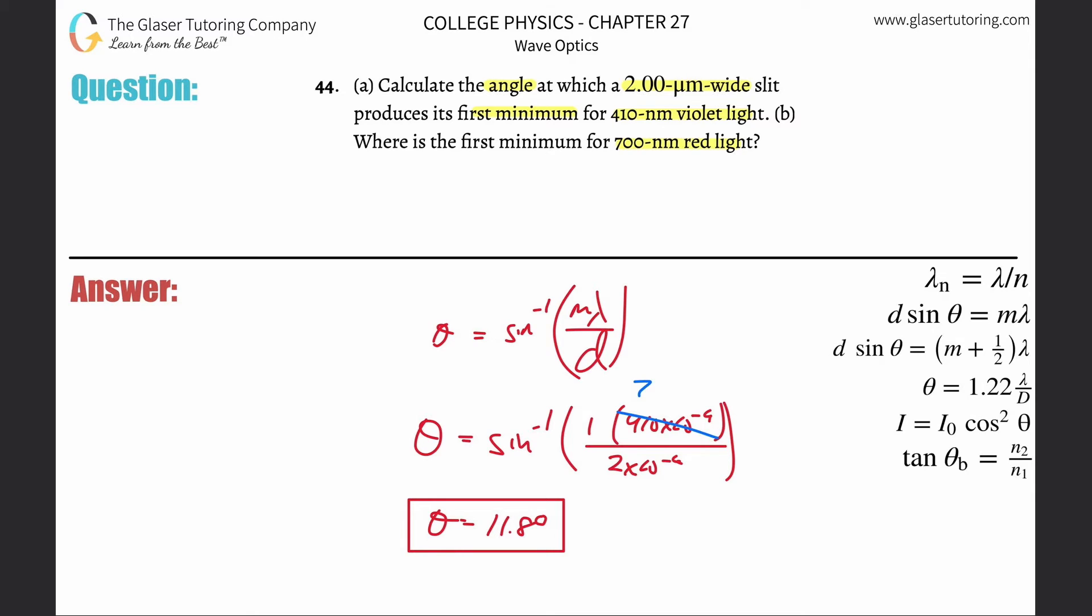Get rid of this number. Plug in 700 times 10 to the minus ninth here and just recalculate. So inverse sine of now 700 times 10 to the minus ninth divided by two times 10 to the minus sixth. And what do you get? So theta is equal to 20.5 degrees.